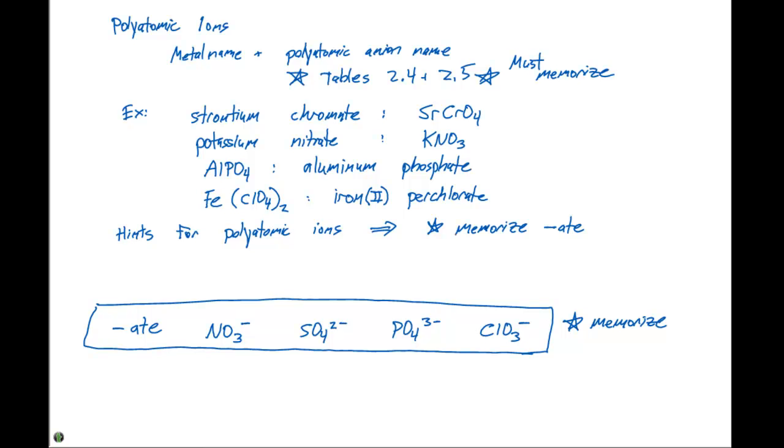The first tip is when you go from an -ate to an -ite, you simply keep the same charge but reduce the number of oxygens. So here you go from NO3 minus to NO2 minus for nitrite.